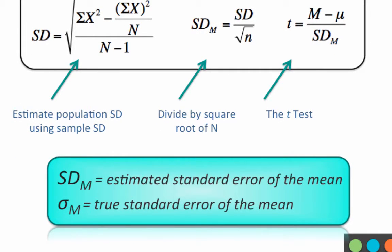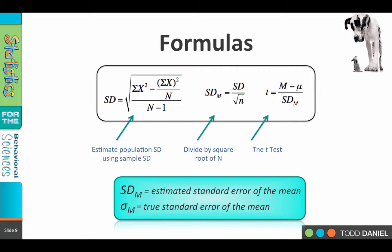You can note these two definitions below for the estimated and the true standard error of the mean. Now that we have those formulas, we are ready to put them to work and try an actual one-sample t-test by hand.